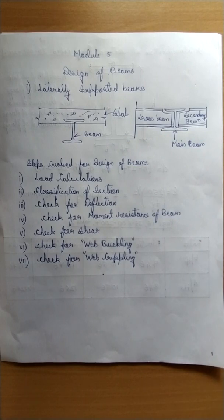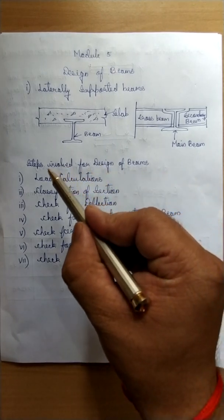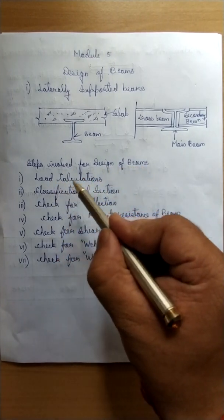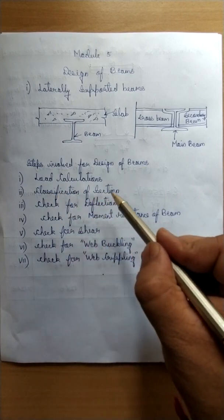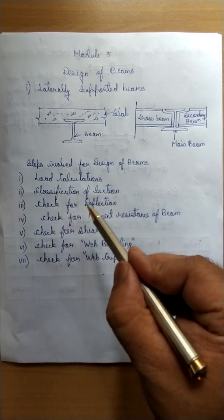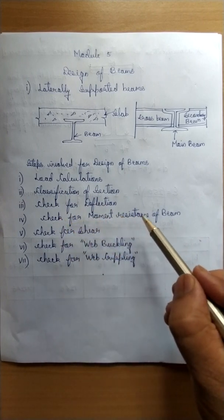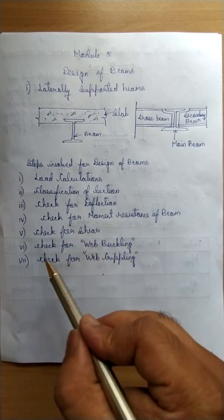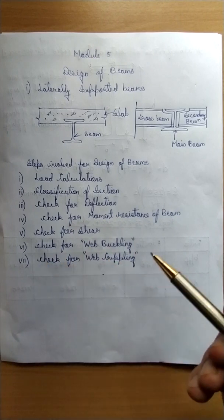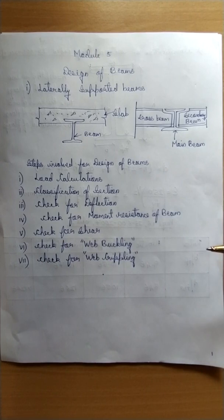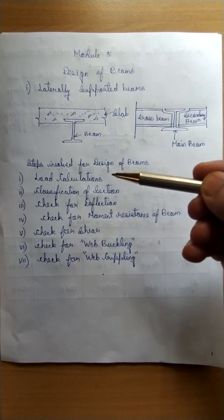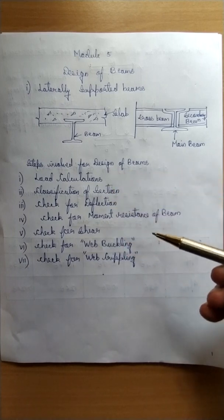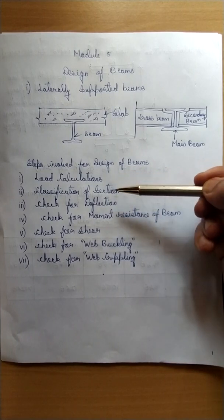Let us study the design steps involved as per the Indian standard guidelines of IS 800 2007. The steps involved for the design of beams are: first, load calculations; second, classification of section; third, check for deflection; fourth, check for moment of resistance; fifth, check for shear; sixth, check for web buckling; seventh, check for web crippling. In today's lecture we will discuss load calculation, classification of section, and check for deflection.